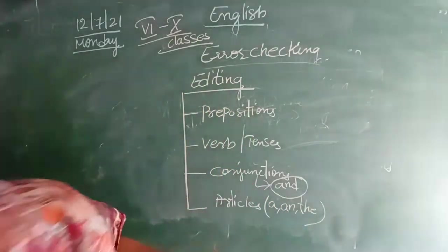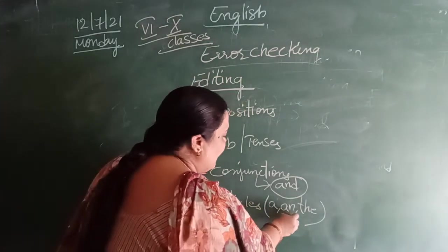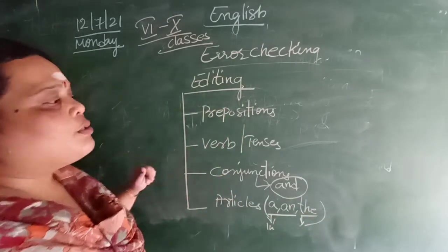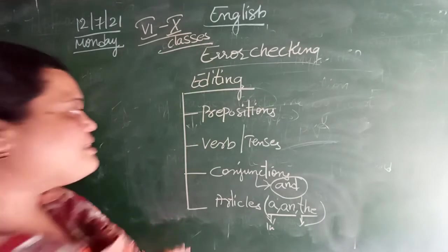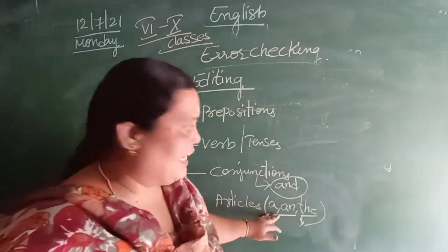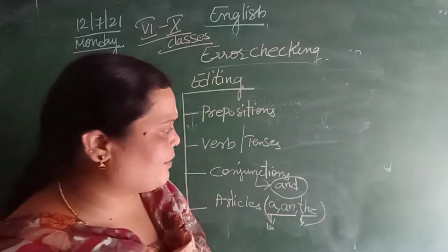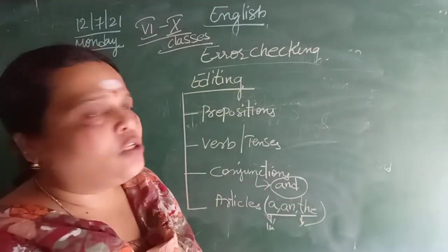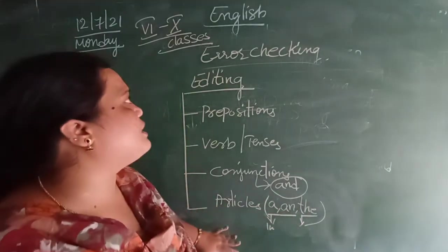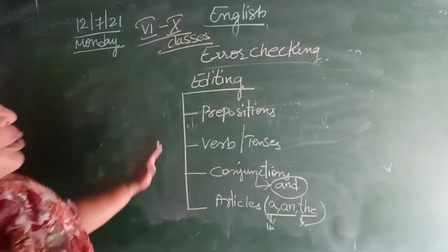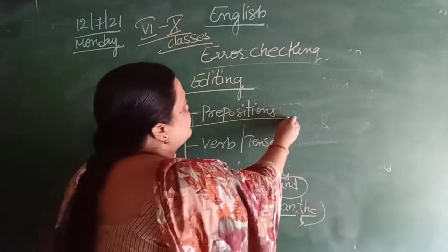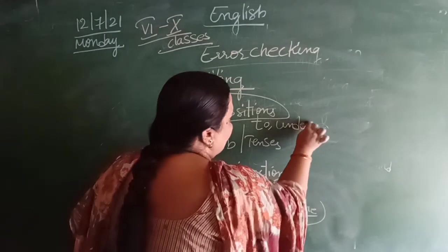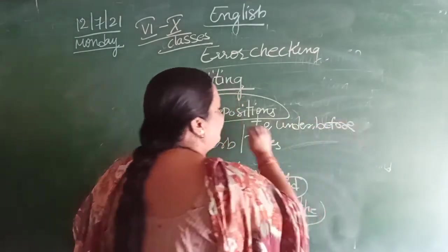Now again, when we split these articles, A and An, these two are indefinite articles. The is definite article. So when it is a mistake of articles, what they do is, generally we use the A word before consonant sounds, and we use An before vowel sounds. This is 100% true. So then generally what they do is they just mismatch that. So we have to concentrate. Whenever we are supposed to do editing, we have to first keep in mind prepositions. In prepositions, we have to check for to, under, before. These things we have to check very carefully.